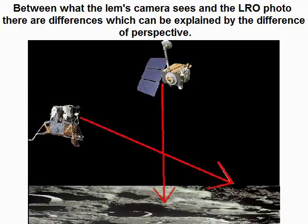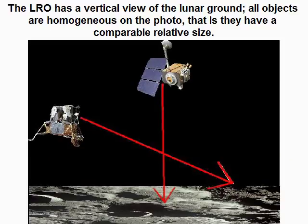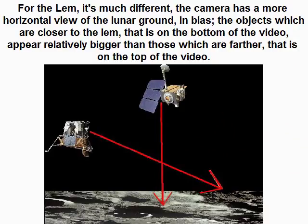Between what the LEM camera sees and the LRO photo, there are differences which can be explained by the difference of perspective. The LRO has a vertical view of the lunar ground, and all objects are homogeneous on the photo — that is, they have a comparable relative size. For the LEM it is much different: the camera has a more horizontal, biased view of the lunar ground, so objects closer to the LEM appear relatively bigger than those which are farther away.